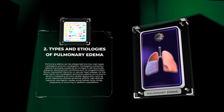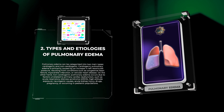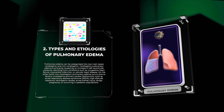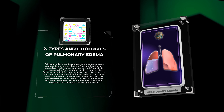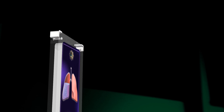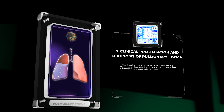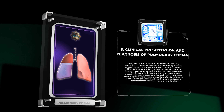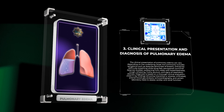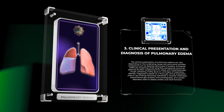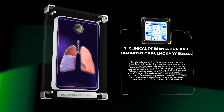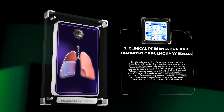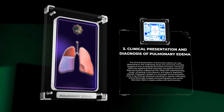Non-cardiogenic causes include acute respiratory distress syndrome (ARDS), high altitude exposure, neurogenic causes, acute kidney injury, drugs, pregnancy, or occurrence in pediatric populations. The clinical presentation commonly includes symptoms such as dyspnea, shortness of breath, orthopnea, difficulty breathing while lying flat, and paroxysmal nocturnal dyspnea — sudden awakening from sleep with breathlessness.